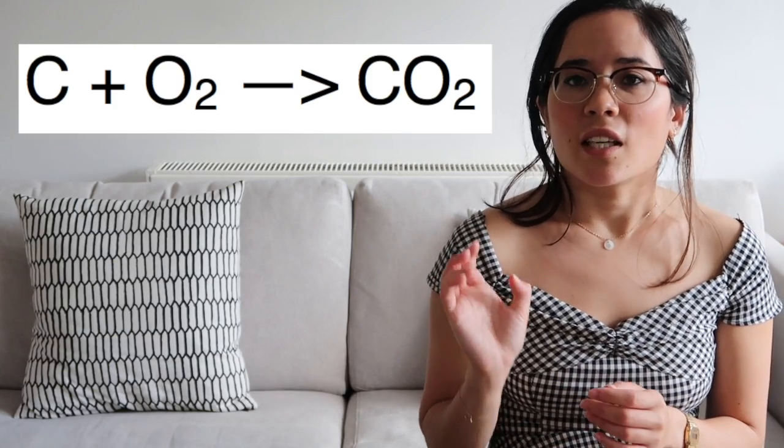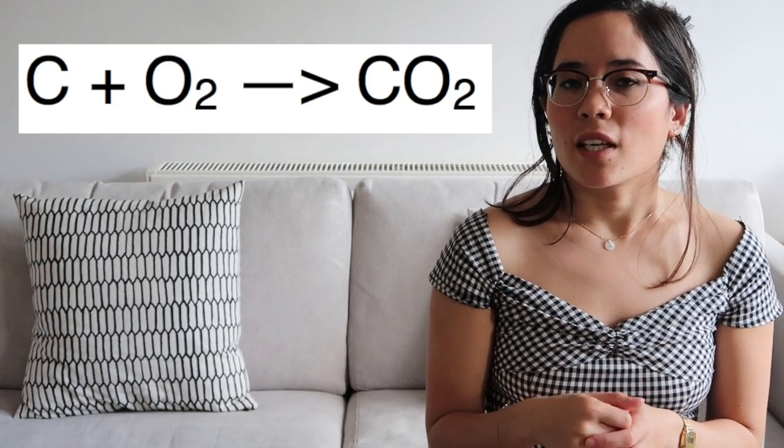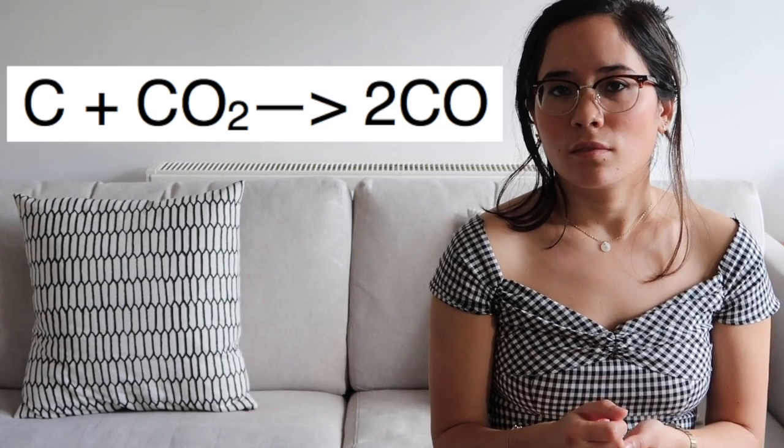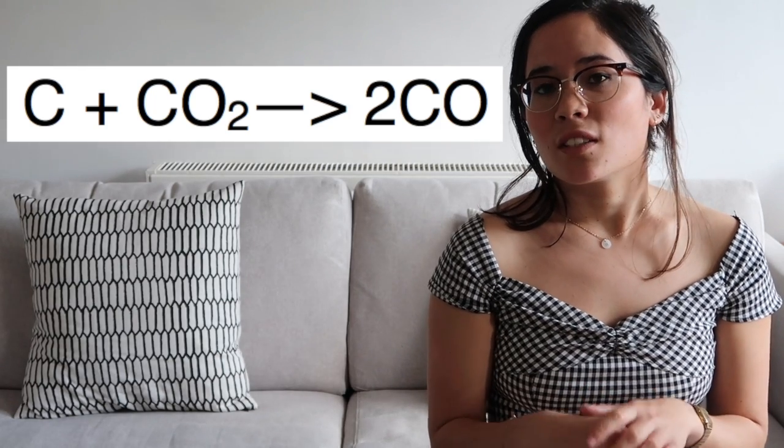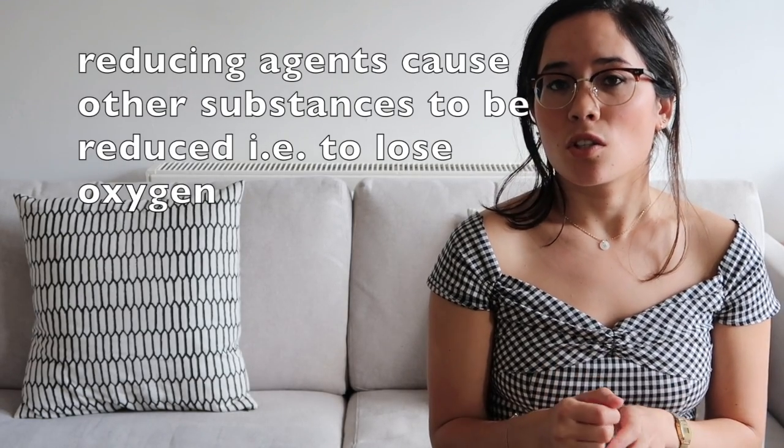Carbon dioxide isn't the reducing agent, so we need to turn carbon dioxide into carbon monoxide, which is the reducing agent. Can you write the equation for that conversion? A reducing agent is a substance which causes another substance to lose oxygen.